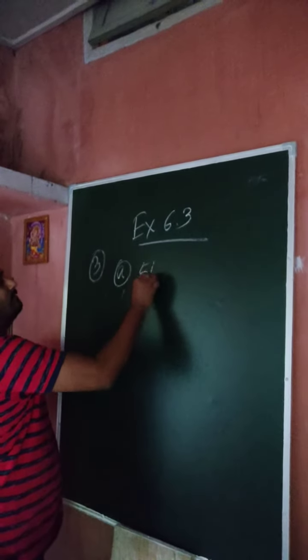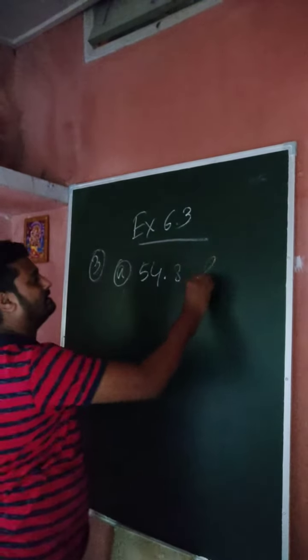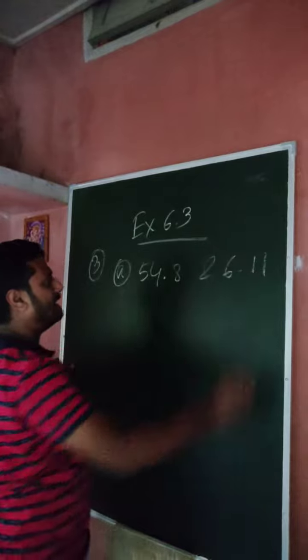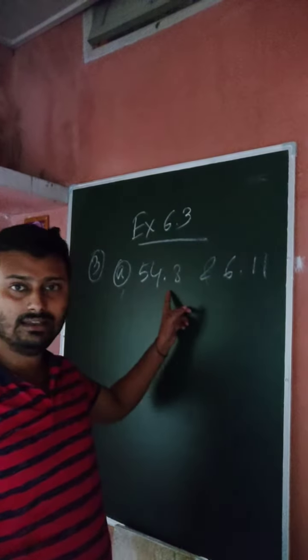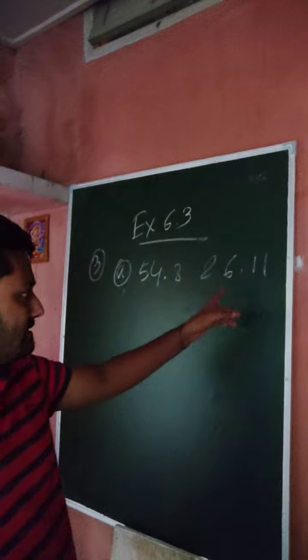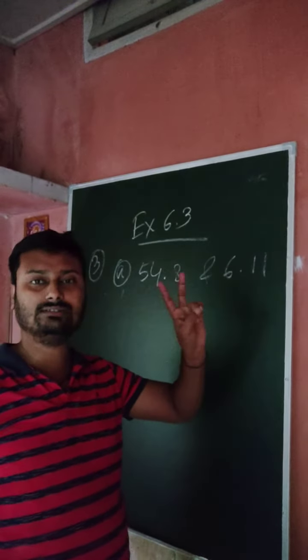So, 54.8 and 6.11. Clearly, in the first case, after the decimal, there are only one decimal. In the second case, after the decimal, there are two decimals.